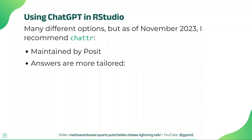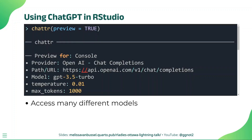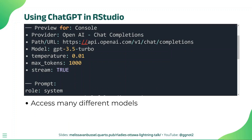First, this package is maintained by Posit, the company that created RStudio. All of their packages are extremely high quality and are more likely to receive frequent bug fixes. Second, the chatter package automatically sends useful information to the chatbot that will greatly improve the quality of the answers provided to you. For anyone that's used ChatGPT before, you know that the more specific your prompts are, the better the responses will be, and Chatter is very specific.